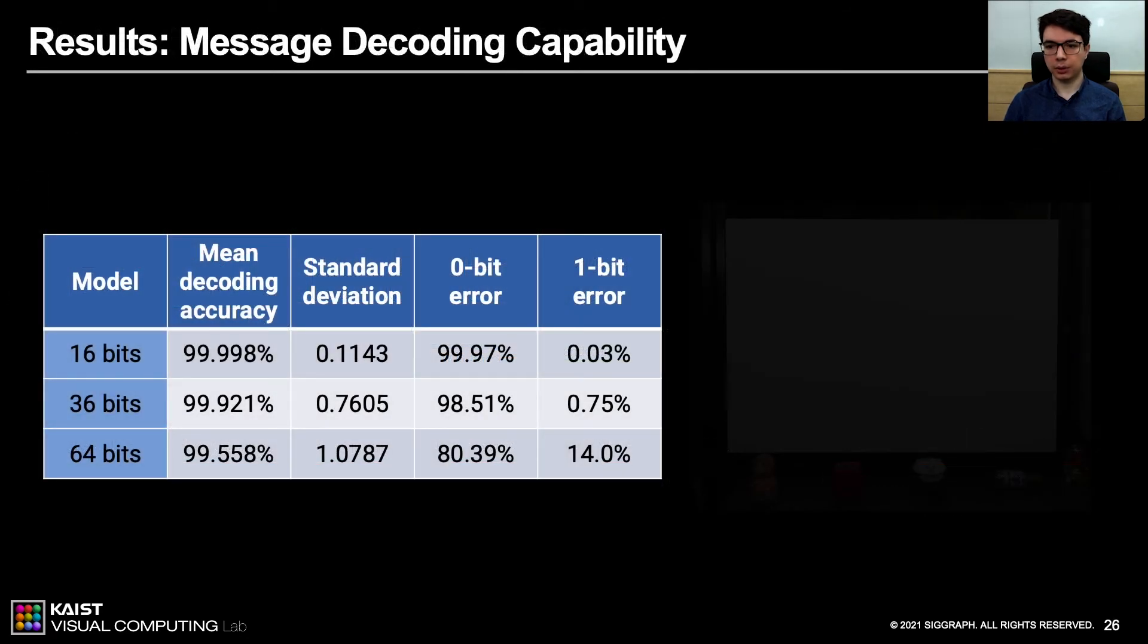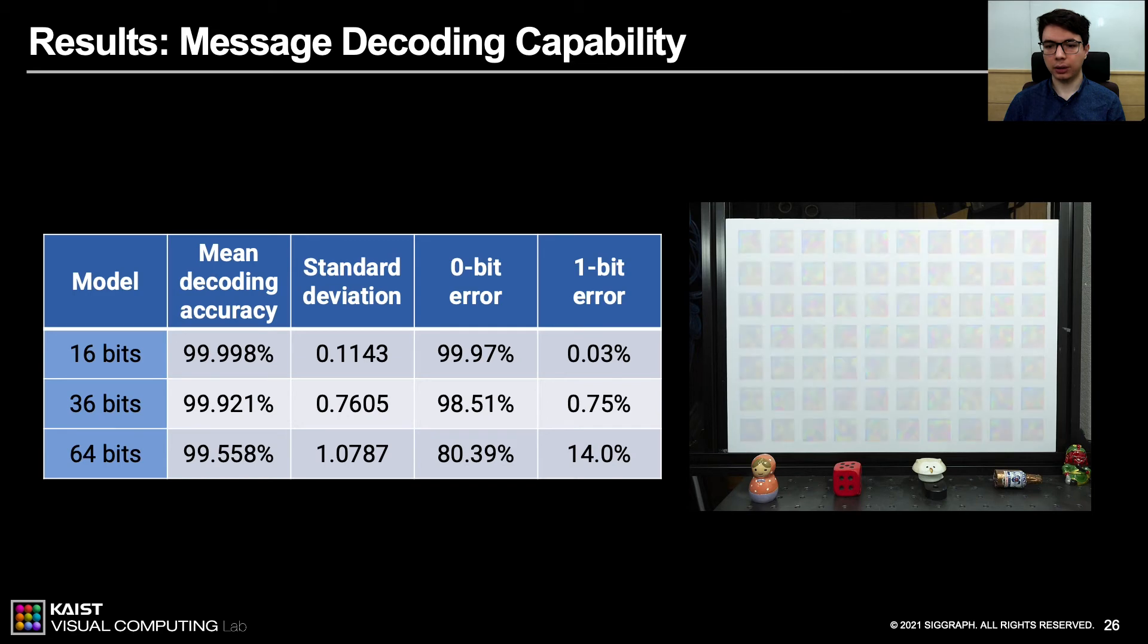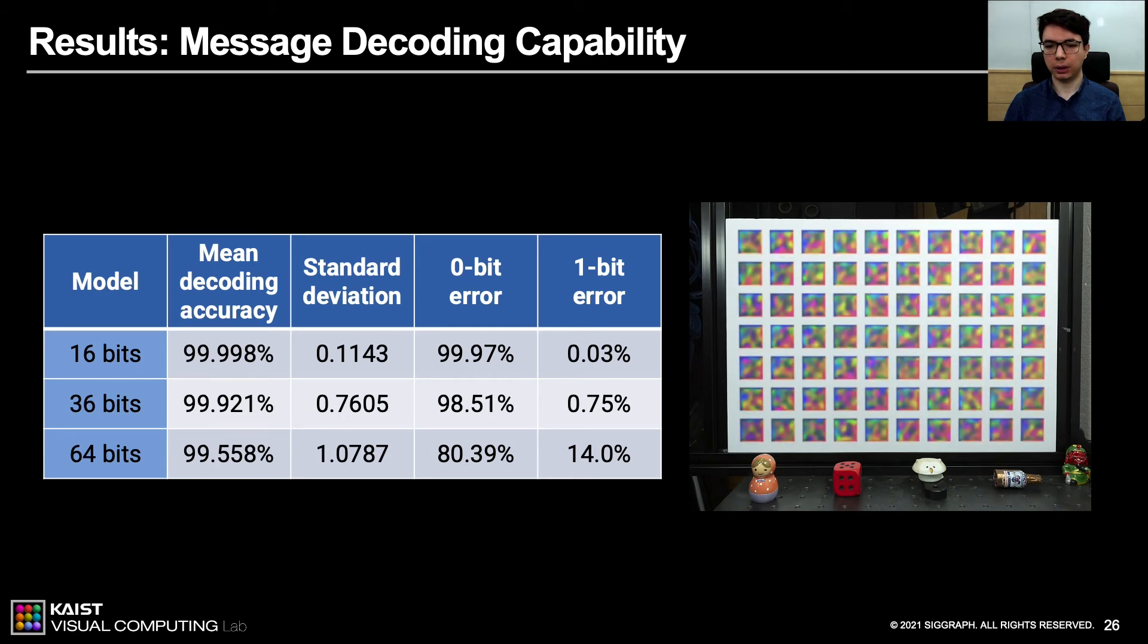Here are experimental results of decoding capability. We trained three models that encodes a different number of bits into a marker. We rendered our markers on a white surface. Then, our network predicted the encoded messages. Depending on the number of correctly predicted bits, we evaluated the statistics. When encoded number of bits gets larger, like 64, it is impossible to cover every single possible marker. Therefore, we cover around 1 billion representative random markers with stratified sampling. As you can see, the increasing number of bits naturally causes a larger prediction error. But for our main model with 36 bits, all the bits of 98.51% of the markers predicted correctly. Also, our mean decoding accuracy is almost 100% for all the models with small standard deviations.